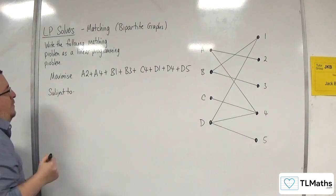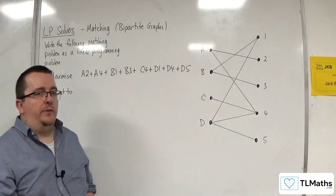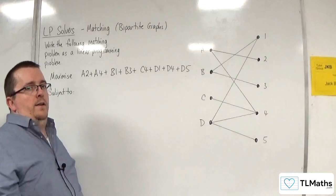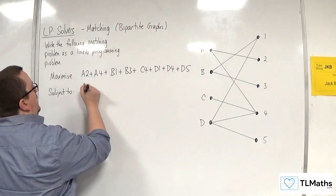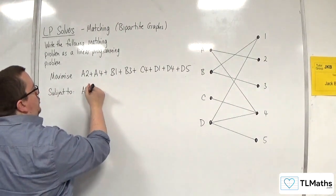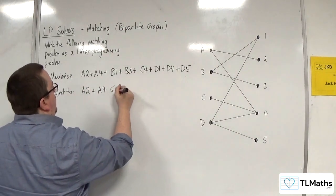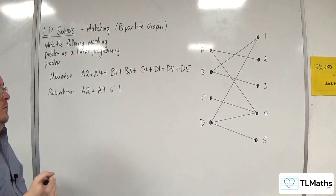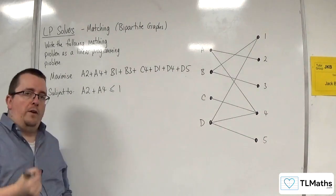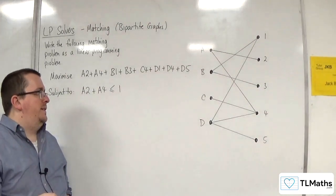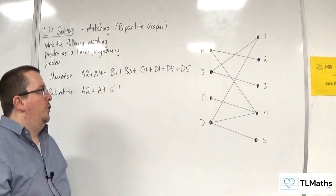Now we want to make sure that each of the workers only do one of the jobs. So worker A can either do job 2 or job 4, and we want at most one of those to be completed. So that's got to be less than or equal to 1.